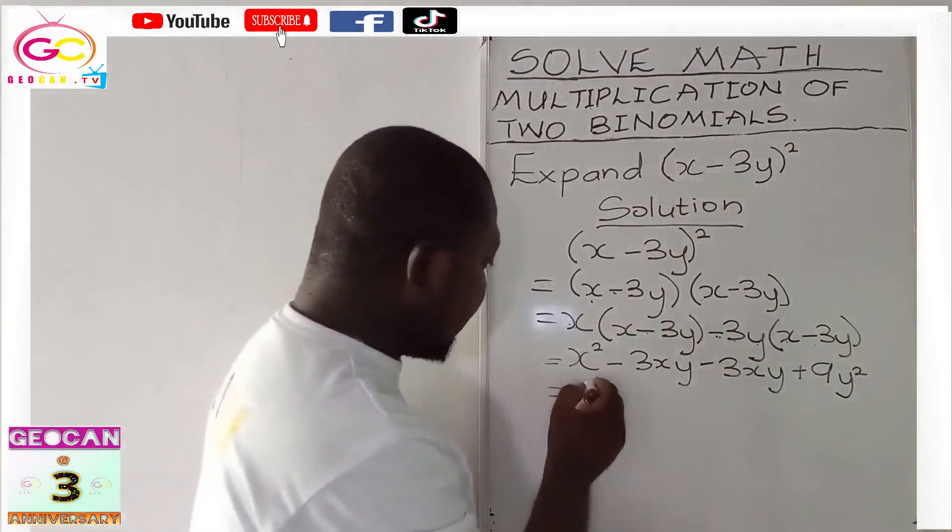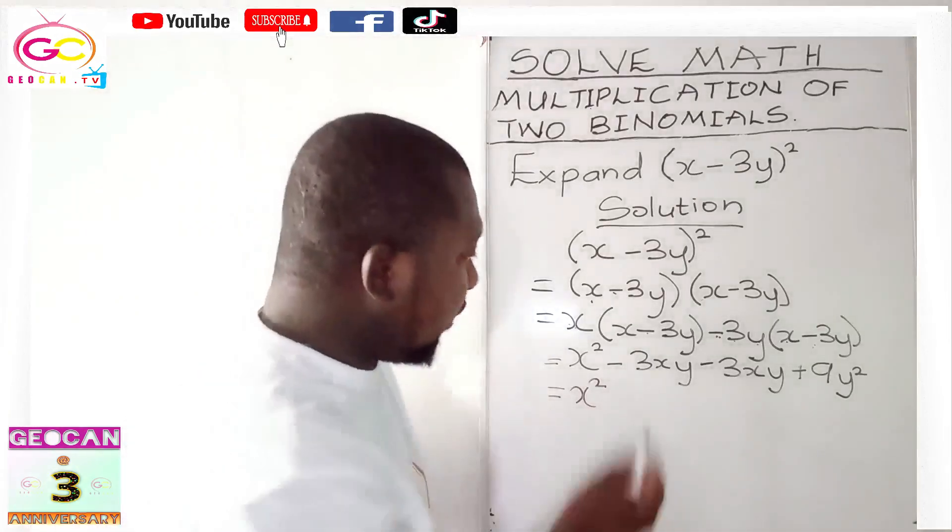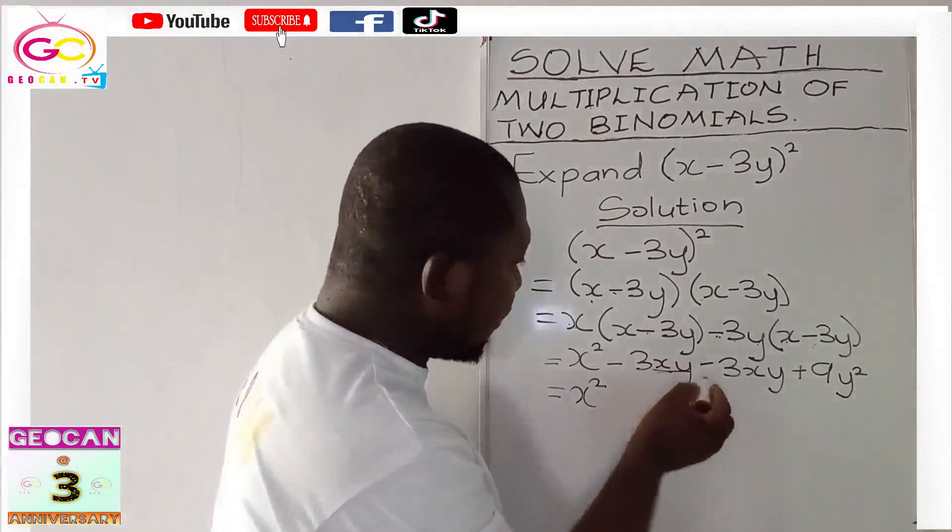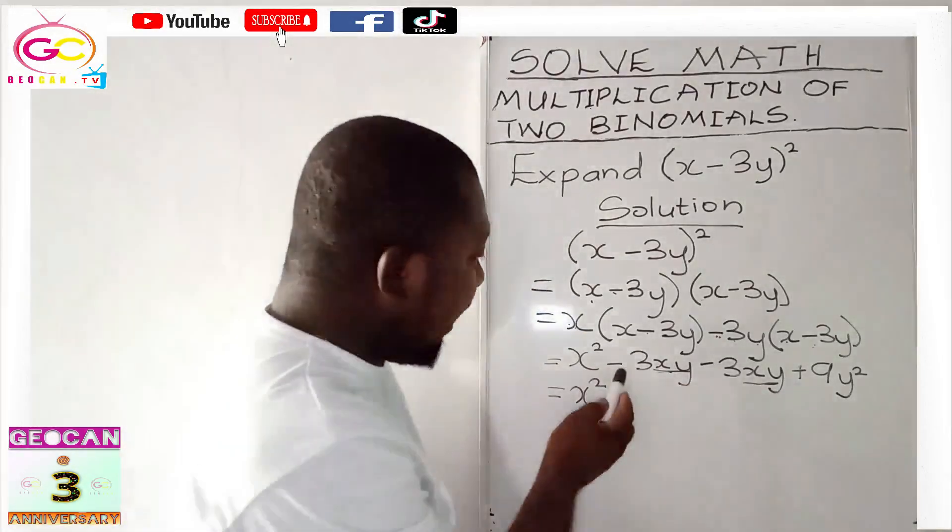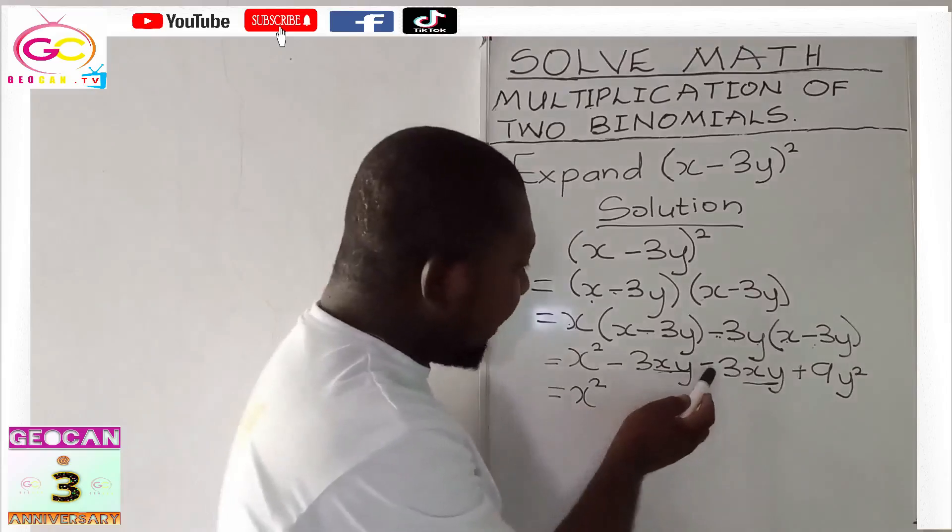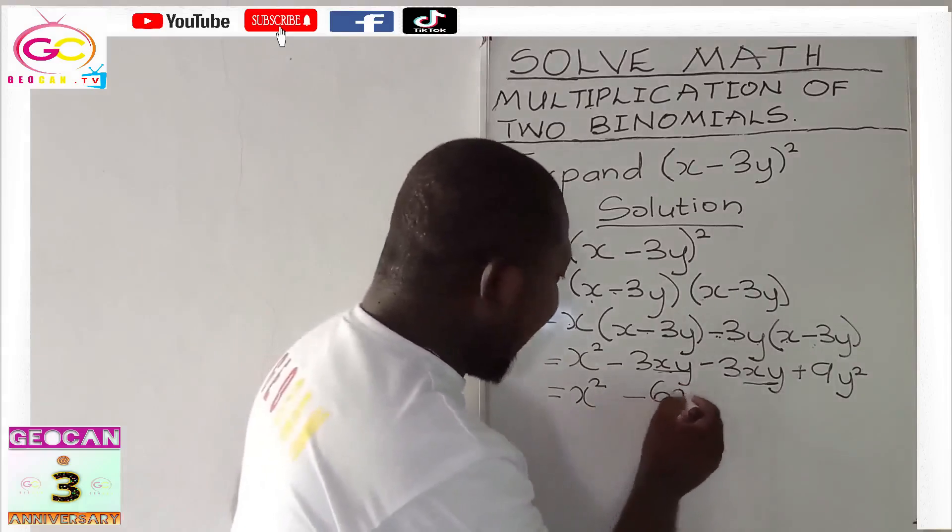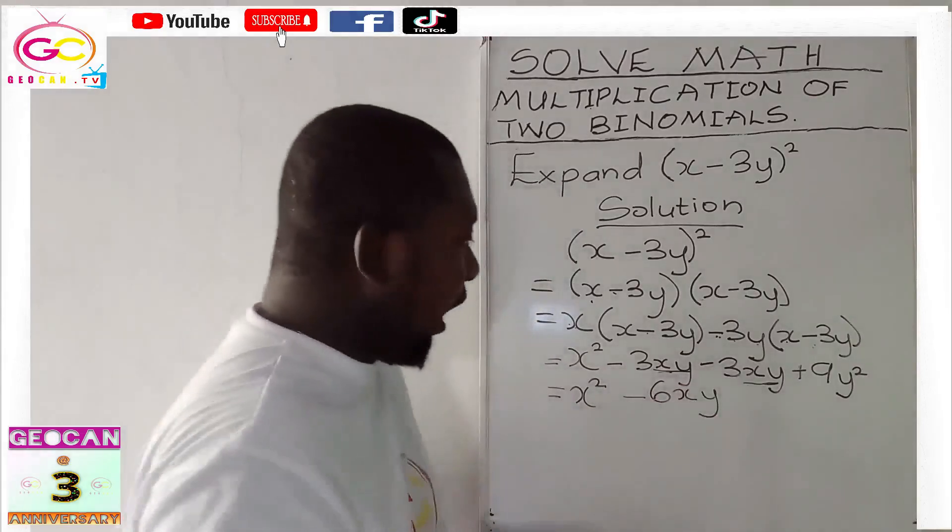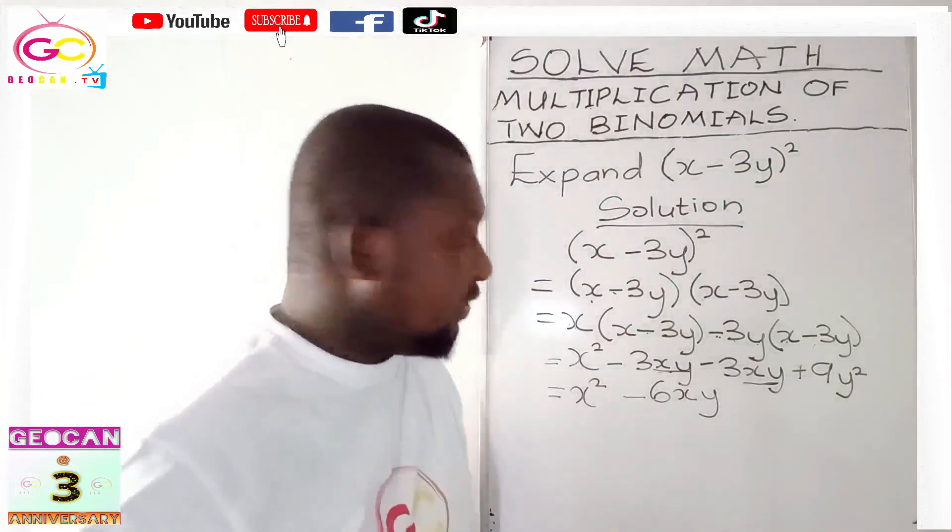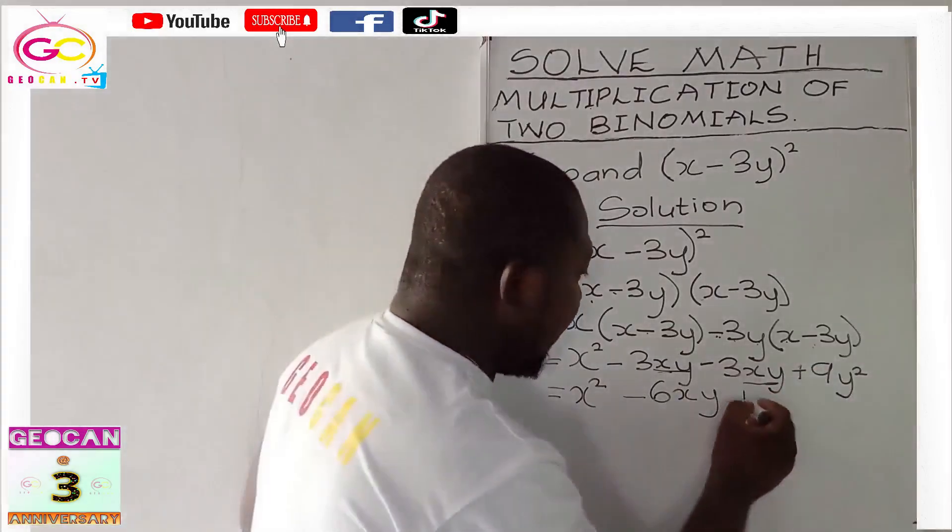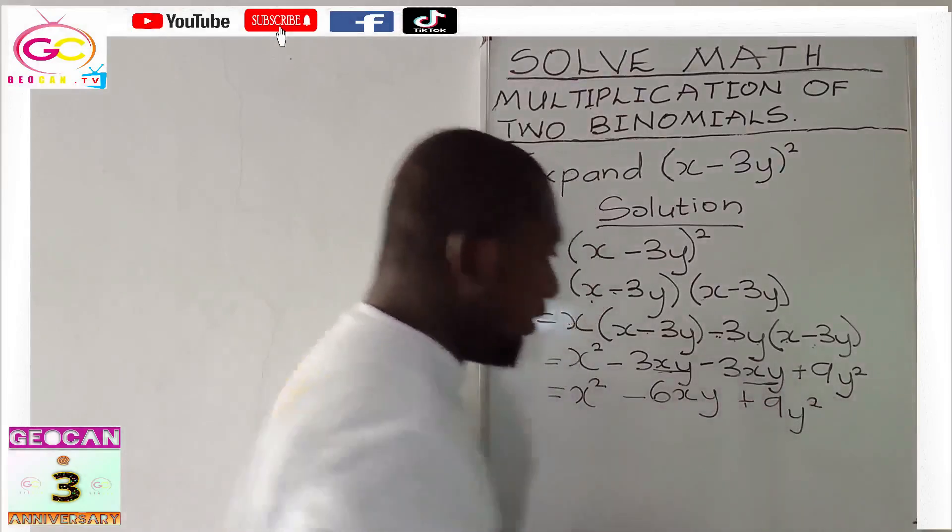We have equal to now x squared. Let's see whether we have like terms that we can solve together. Yes, we have xy here and xy there. So we can solve them together because they are like terms. So negative 3xy minus 3xy. It will give us negative 6xy. You are owing, then you go and owe more. Practically, that's what it means.